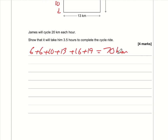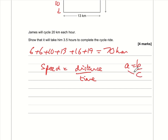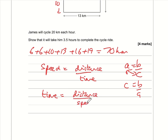Now we need to find how long it takes to ride 70 km at 20 km/h. Speed = distance ÷ time, so time = distance ÷ speed. Time = 70 ÷ 20 = 3.5 hours.